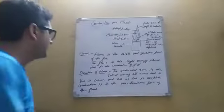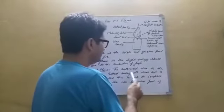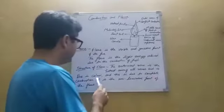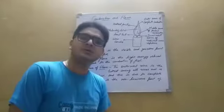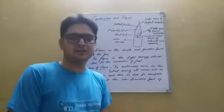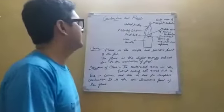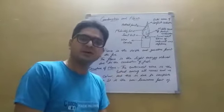The outermost zone is the hottest among all zones and is blue in color. This is due to complete combustion. It is the non-luminous part of the flame. Today we studied the parts of the flame. You have to draw this beautifully, showing the different parts and making notes about the flame.